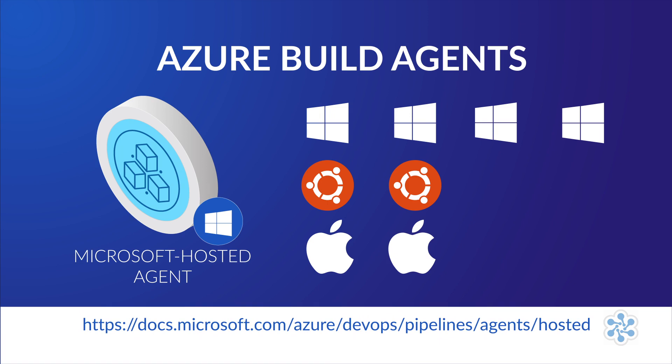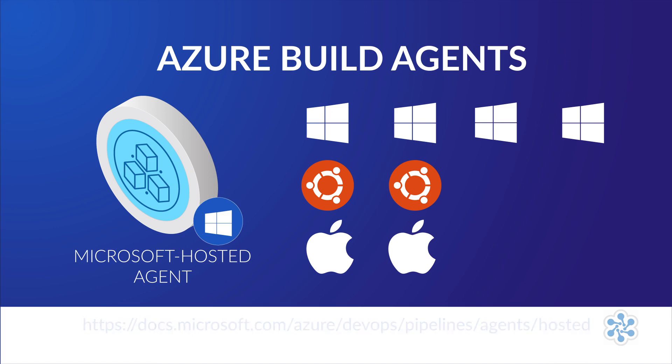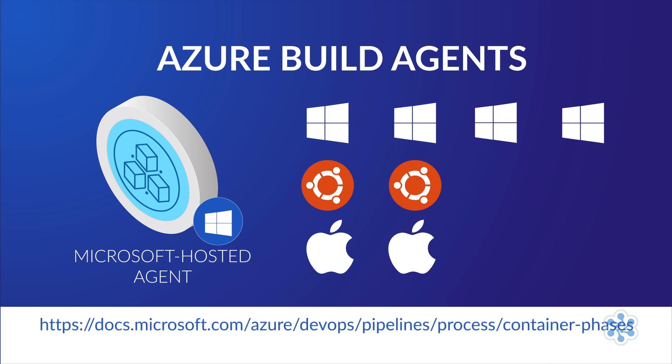If only the version of the software installed on the agent machine is a concern and not the operating system itself, Microsoft hosted agents also have the option of using either a Windows or Linux container and using your pipeline to install the version-specific software and tools you need to build your project. There are, however, some unique requirements and limitations for each operating system. You can find the specific requirements and limitations of the container jobs at the provided URL.